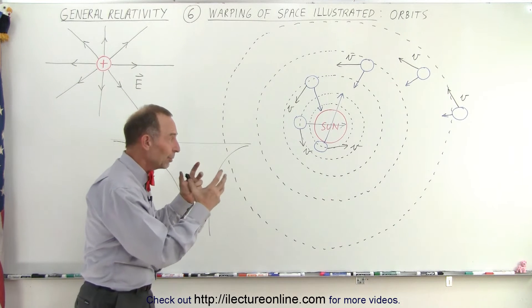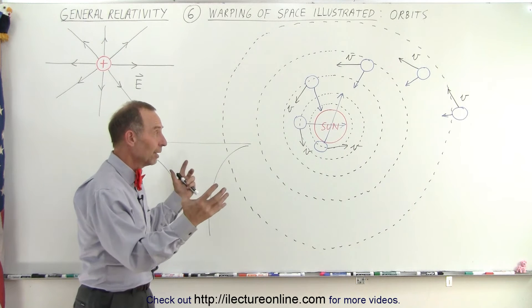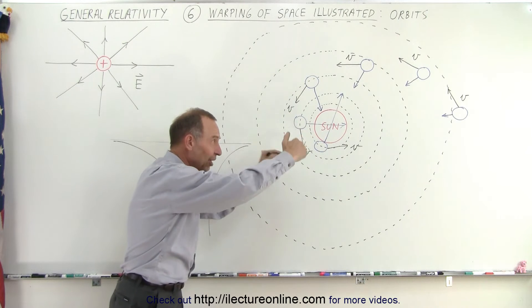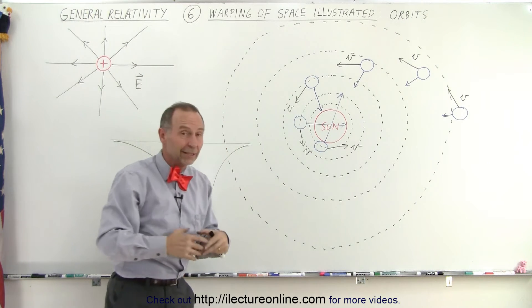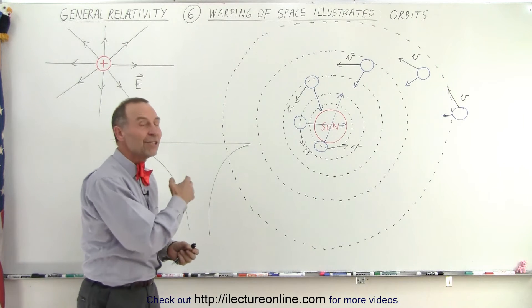But somehow, we need to be able to grasp that concept because that's really what appears to be going on. Something is happening around the sun that causes space to curve so that things will fall into that curvature. What it looks like, we don't know, but we can indeed see the effects.